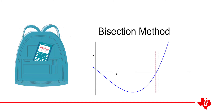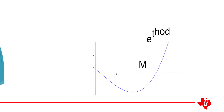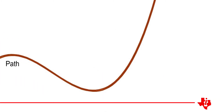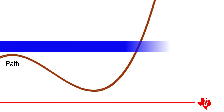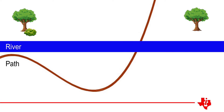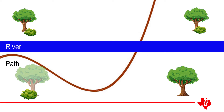The bisection method can help locate a point where a function crosses the x-axis. The bisection method makes some mathematical assumptions which may be conceptually simplified to a river crossing. If you are standing on one side of a river and you need to get to the other side, at some point your path simply must cross the river.